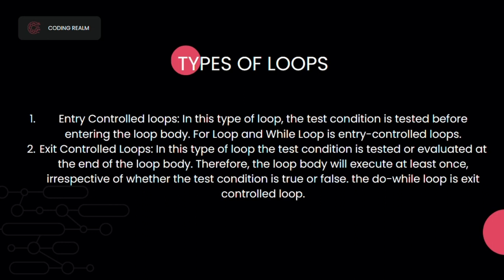We have two types of loops. The first is entry controlled loops — in this type, the test condition is tested before entering the loop body. For example, the for loop and the while loop are entry controlled loops. The second is exit controlled loops — in this type, the test condition is tested or evaluated at the end of the loop body, like the do-while loop.